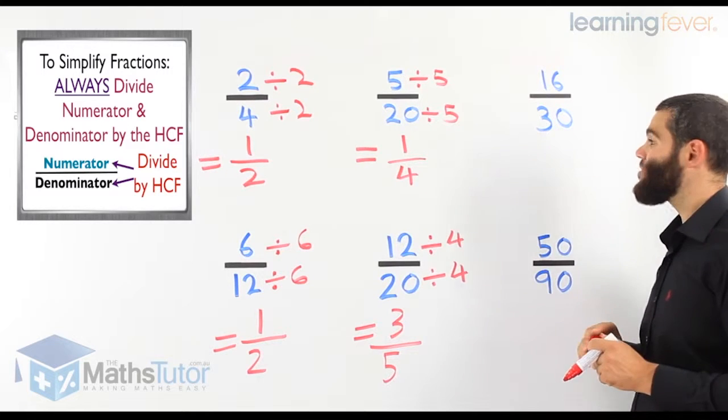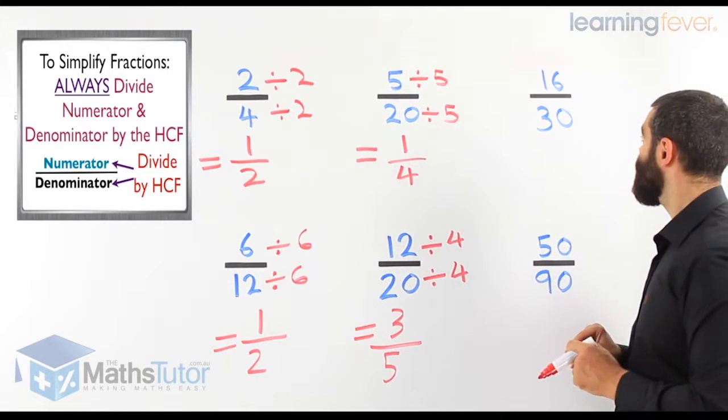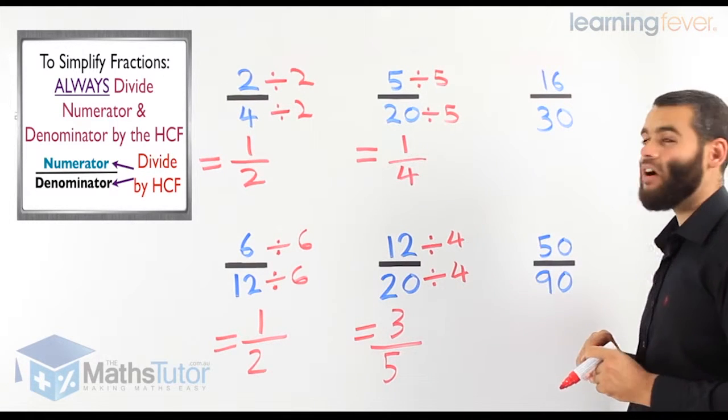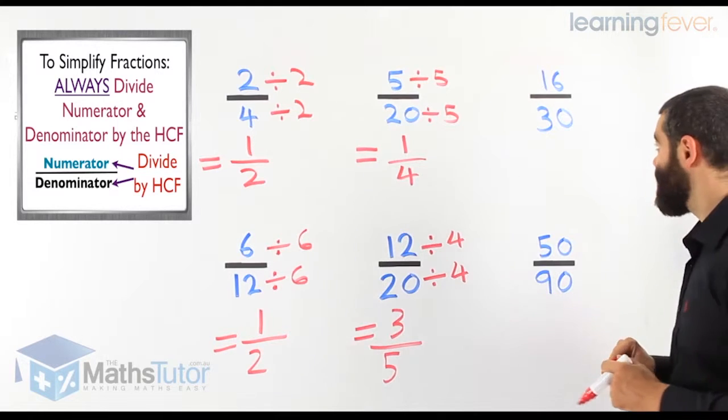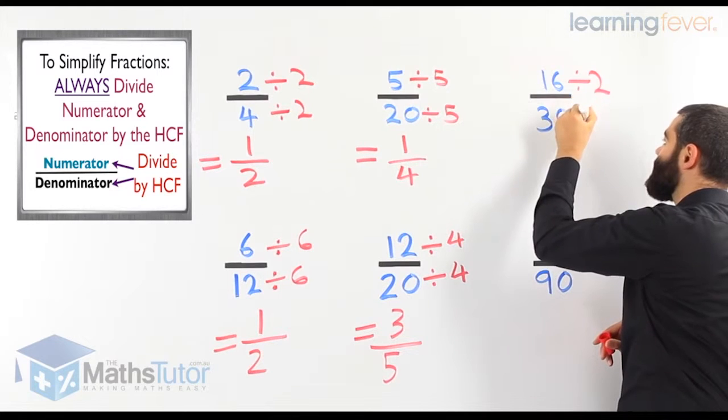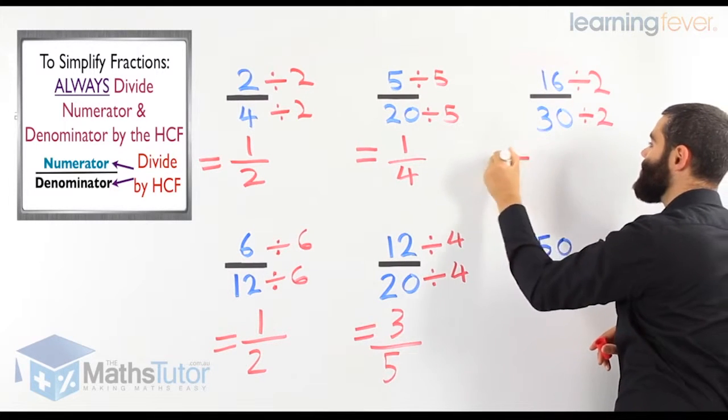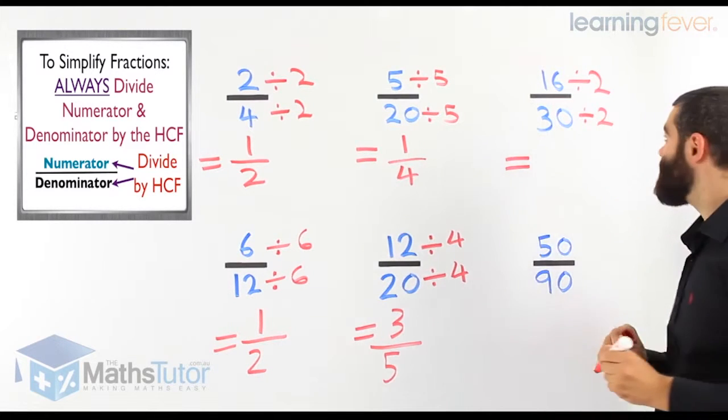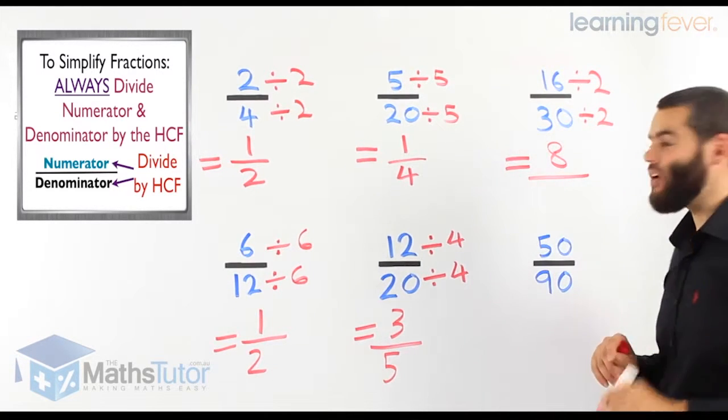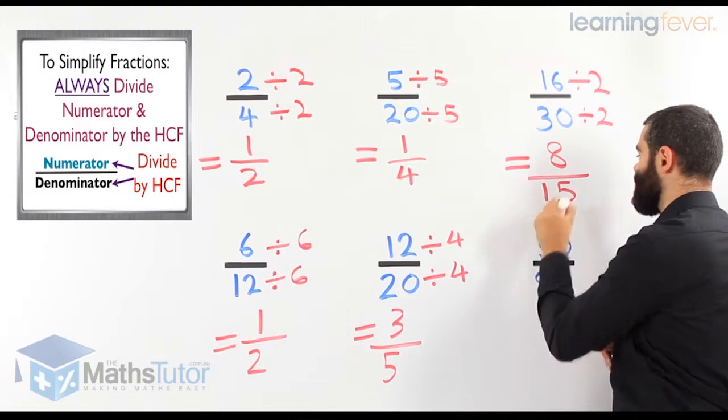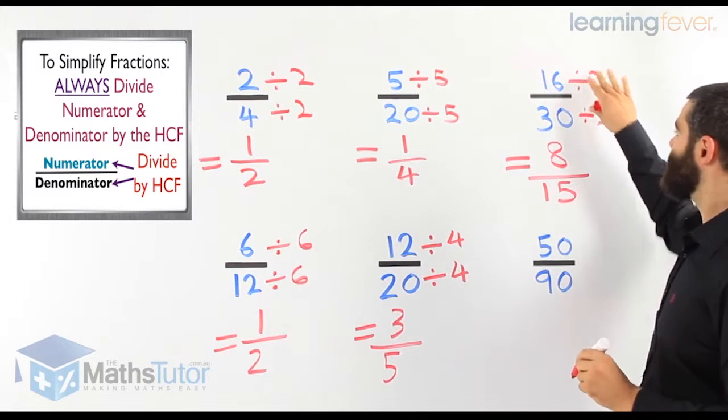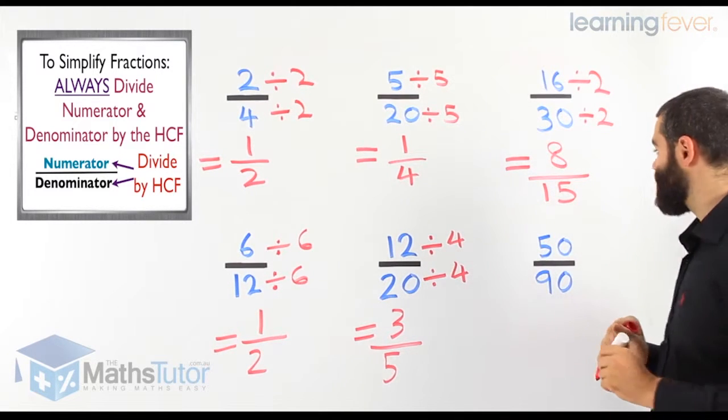This example, we have 16 over 30. See if you can find the HCF. 16 over 30. What's the highest common factor? Well, it's basically 2. So we have to divide by the HCF. In this case, it's 2. 16 divided by 2 is 8. And 30 divided by 2 is 15. 8 over 15 is simplest form. We've simplified 16 over 30, and we got 8 over 15.